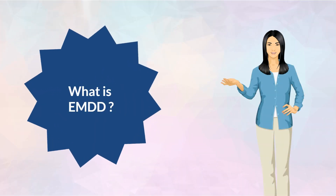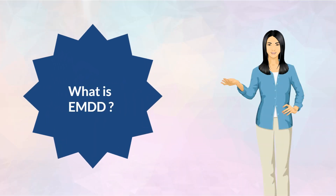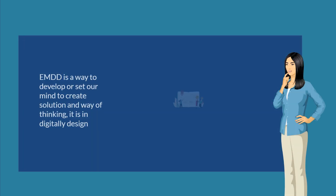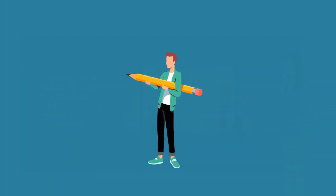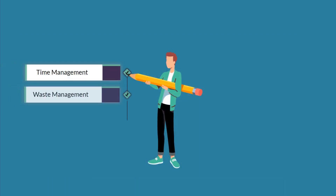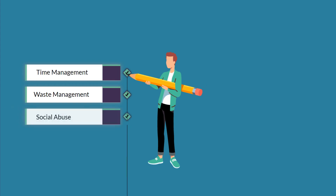What is EMDD? EMDD is a way to develop or set our mind to create solution and way of thinking. It is in digitally design. For example, time management, waste management, social abuse.